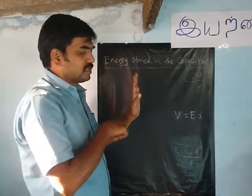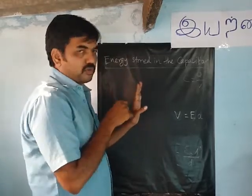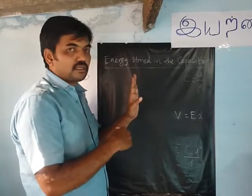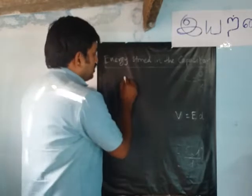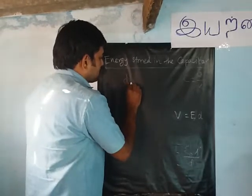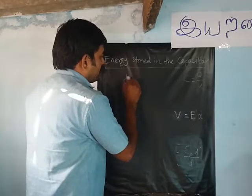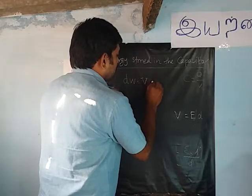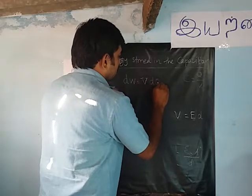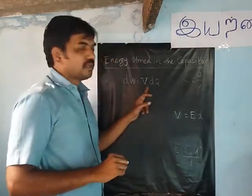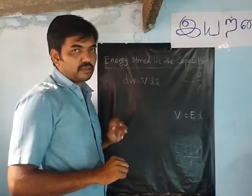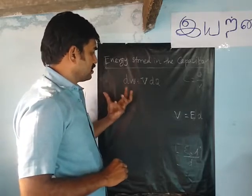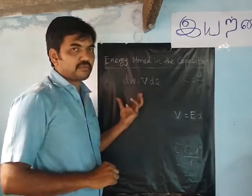The battery will move charges into the capacitor. The battery supplies the charges and transfer involves some work done, so dw is equal to v into dq. If you integrate it, we can get the expression for work done.